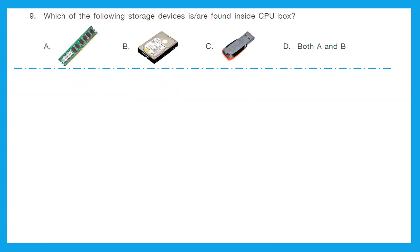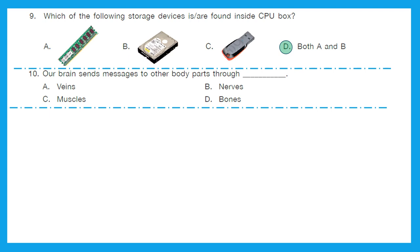Question 9: Which of the following storage devices is found inside the CPU box? Is it the hard drive, pen drive, or both A and B? The right answer is option D — both A and B are found inside the CPU box. Question 10: Our brain sends messages to other body parts through? The right answer is nerves. Nerves are the messengers of the brain. Option B is the right answer.